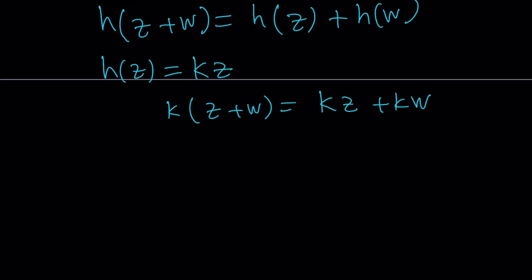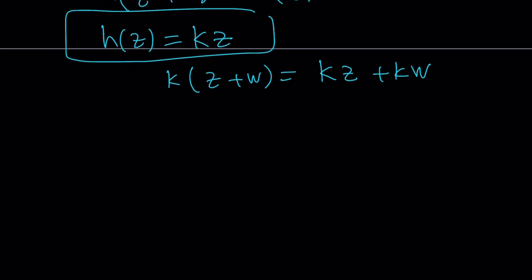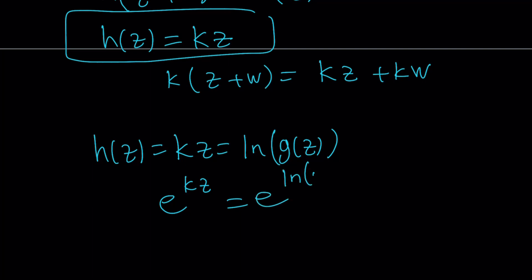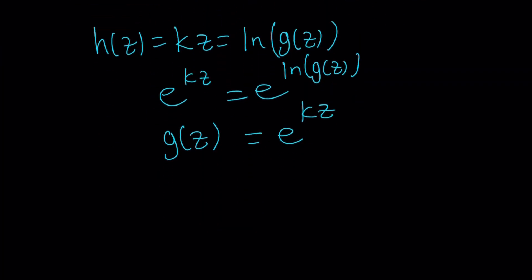Now, let's go ahead and back substitute everything. We got the result, but we're not looking for h. hz is equal to kz. Now, h, remember, was ln gz. So from here, if you do e to the power both sides, e to the power kz equals e to the power ln gz. But e to the power ln something is something. So from here, gz becomes e to the power kz. k is a constant, z is the variable.